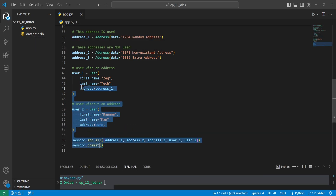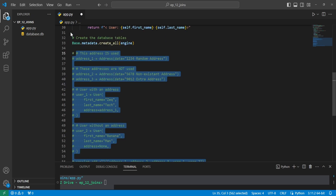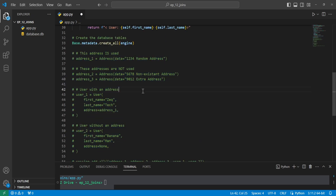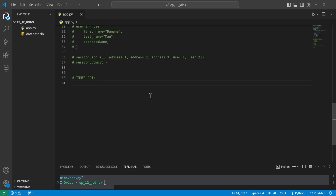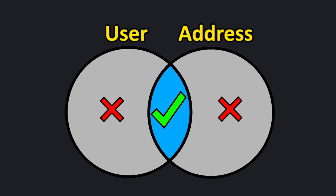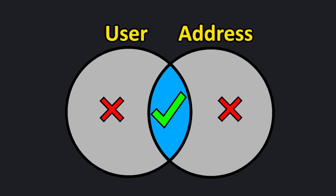We'll comment all of this out by pressing Control+Forward Slash or Command+Forward Slash on Mac. Now we'll start with the inner join. An inner join will return records that are in both tables. So if there's a user associated with an address, we get that record returned. But if there's a user without an address or an address without a user, we won't get those records at all.